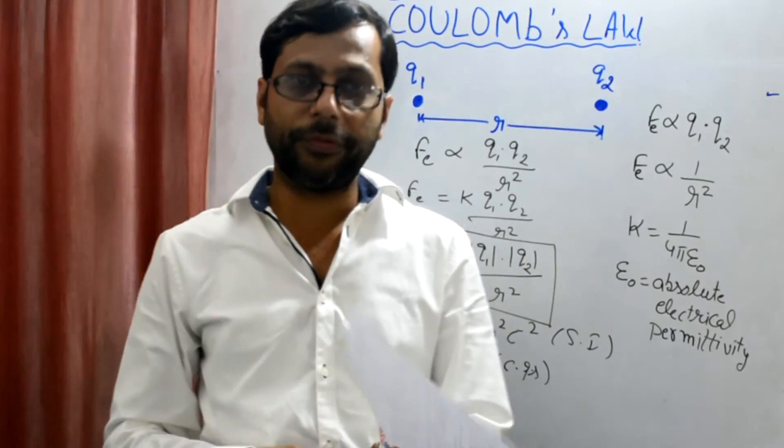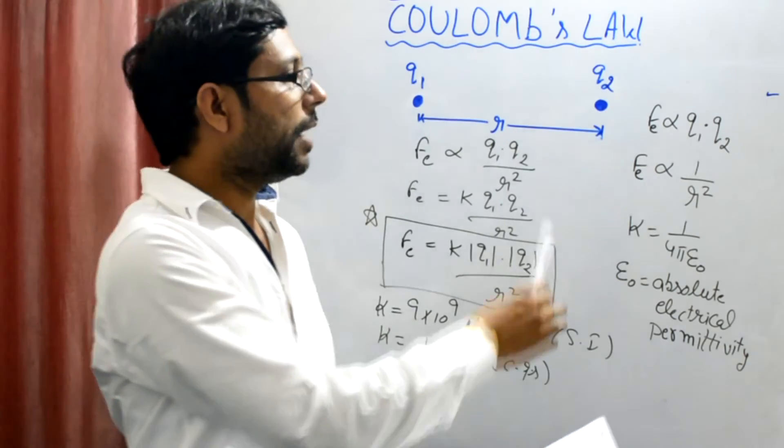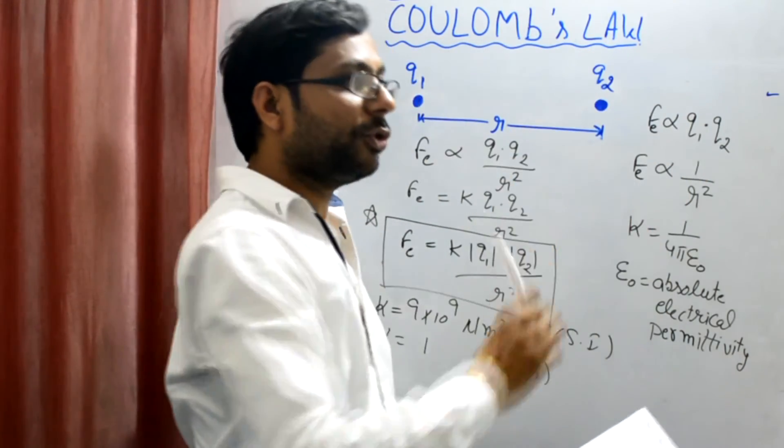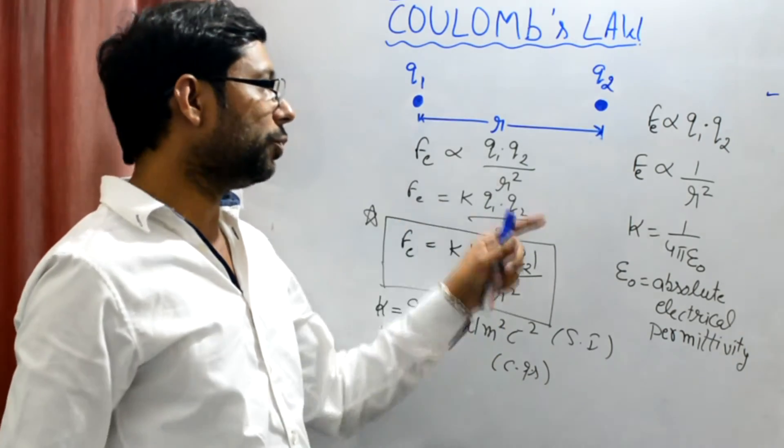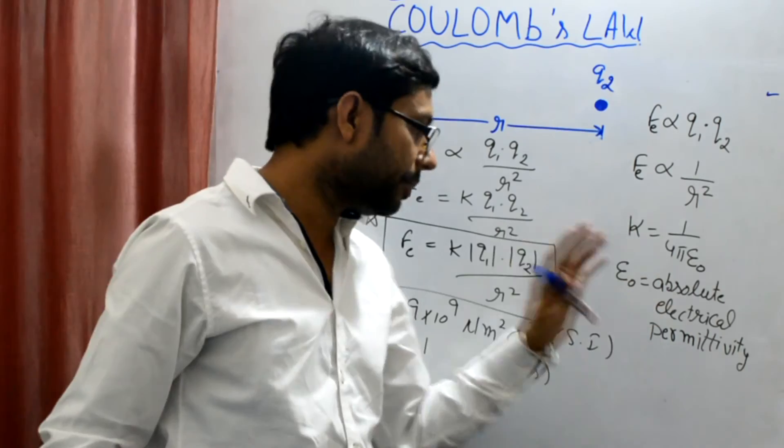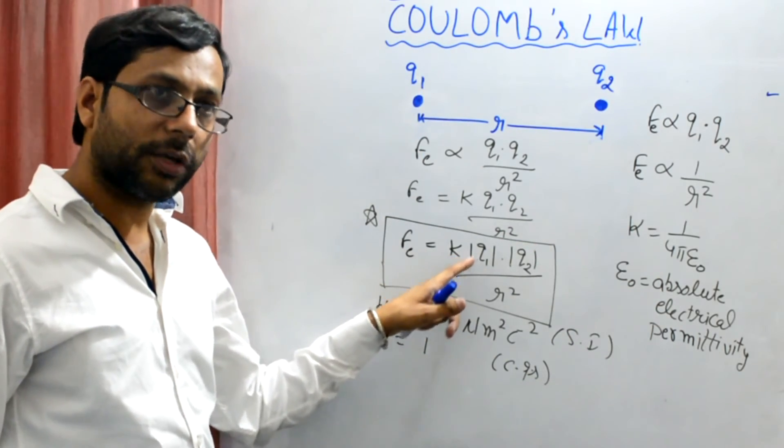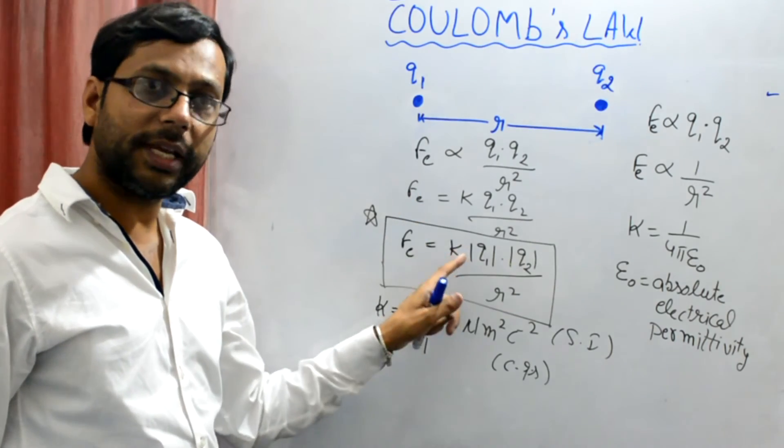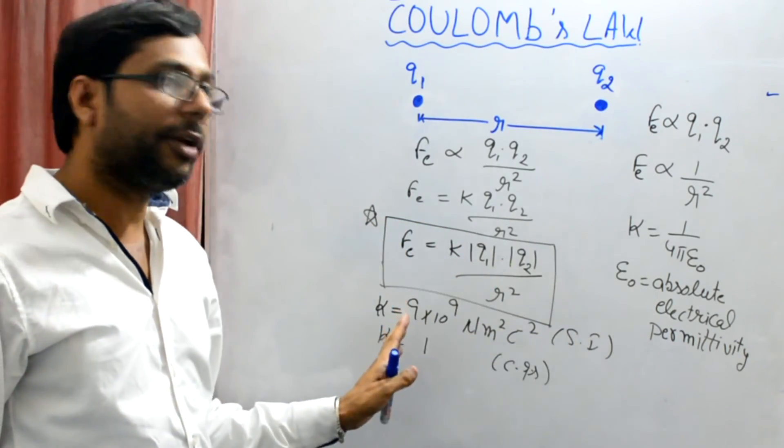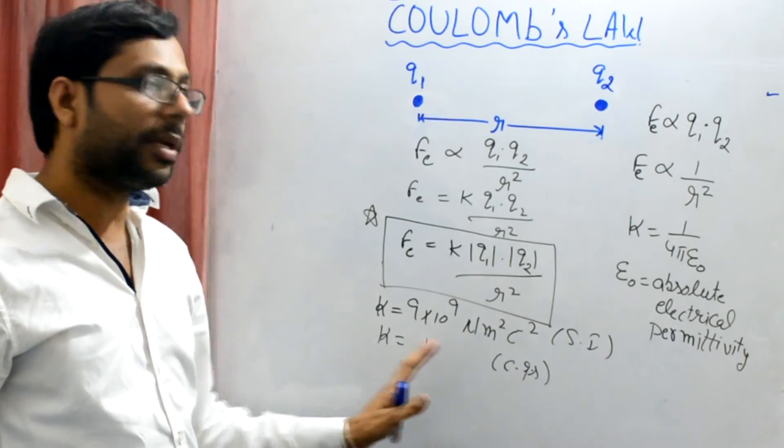In today's video, we have discussed Coulomb's law. How it is done, what Coulomb said. Directly proportional to the product of the charges, inversely proportional to the square of the distance between the two charges. K is the electrostatic constant. Epsilon naught is the absolute electrical permittivity. And we ignore the sign of the charges. That's why we use the modulus sign. Value of K for SI system is 9 times 10 to the power 9 newton meter square per coulomb square. And for CGS system it is 1.